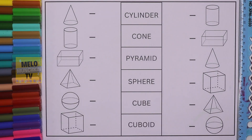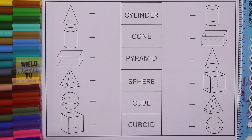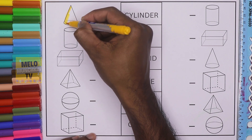Hello kids! Today in this video we will learn 3D geometrical shapes. As you can see, a few images are given on the right hand side and a few images are given on the left hand side, and in the middle the names of the shapes are given. We need to join and match the shapes. So without much ado, let's get started. First I'll take yellow color to color the shape called cone — this is cone.